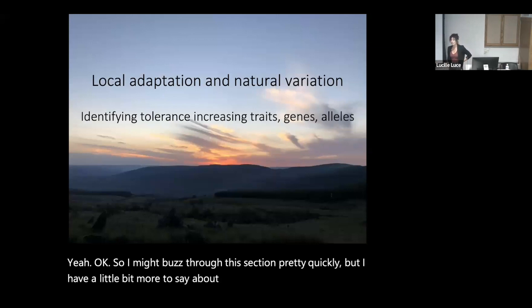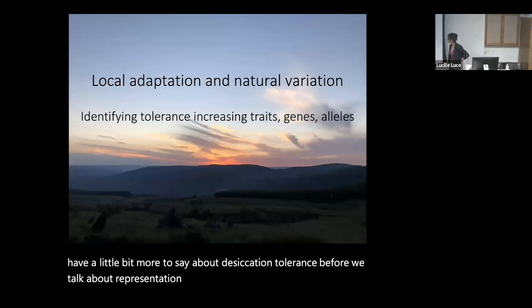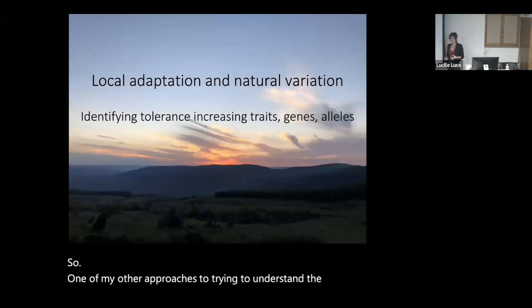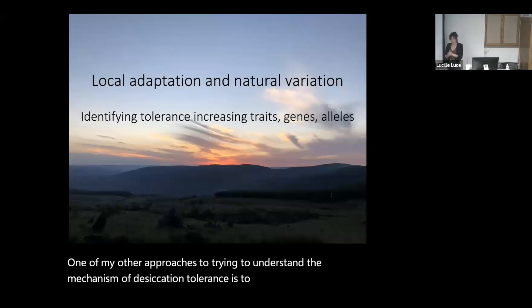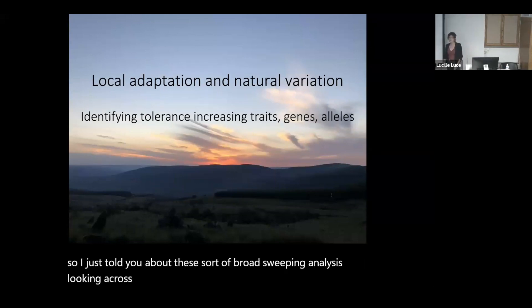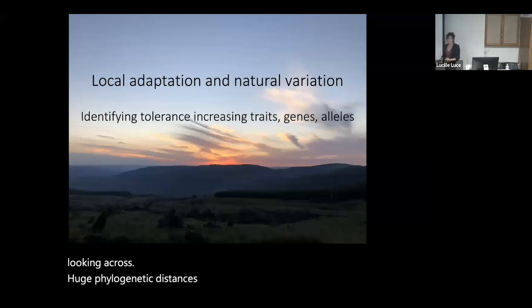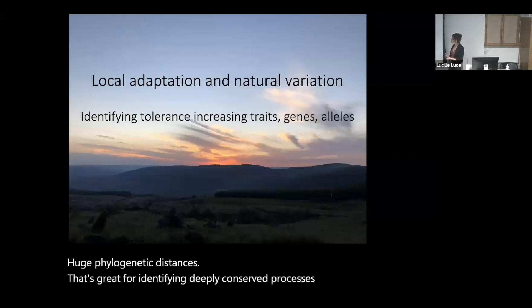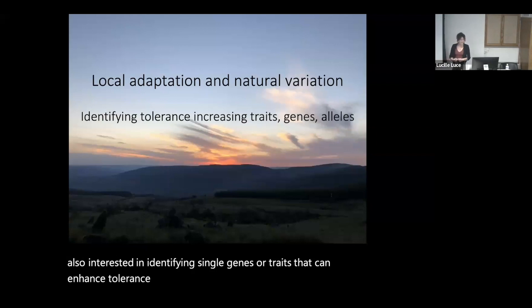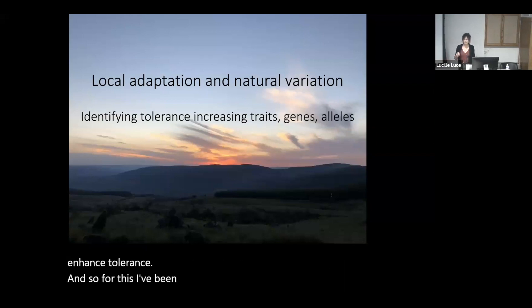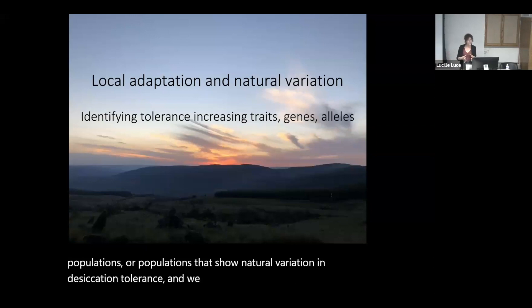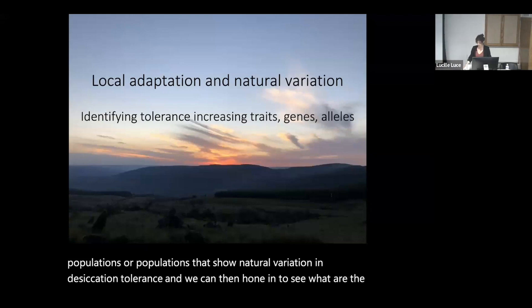I have a little bit more to say about desiccation tolerance before we talk about representation and equity. One of my other approaches is to narrow down considerably. I'm also interested in identifying single genes or traits that can enhance tolerance. For this, I've been working on identifying locally adapted populations or populations that show natural variation in desiccation tolerance, to hone in on what underlying traits are driving this variation.